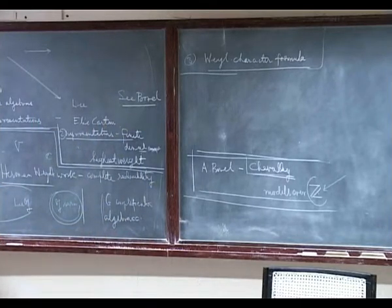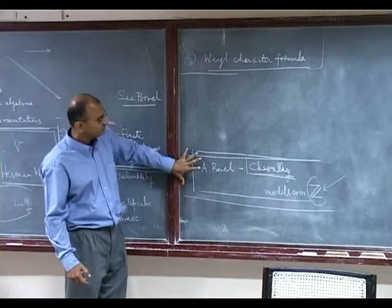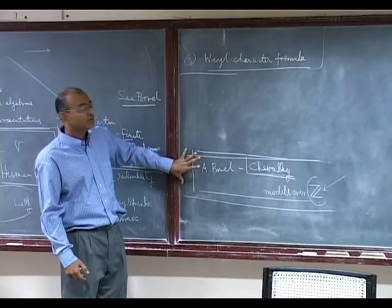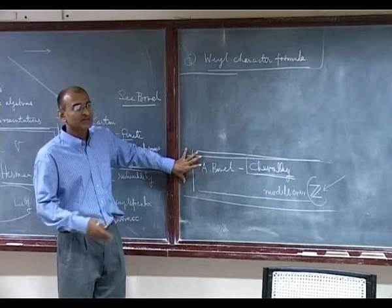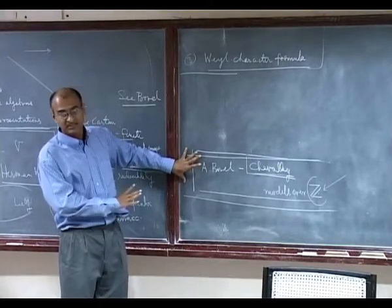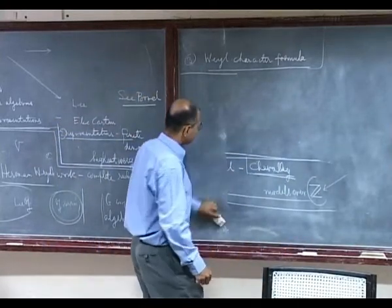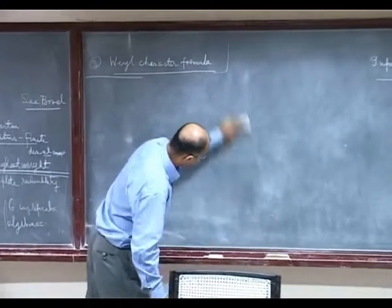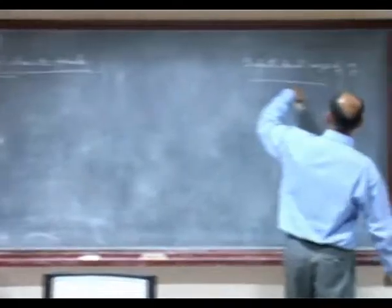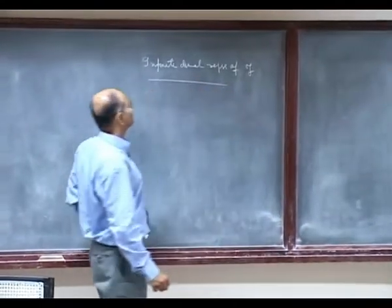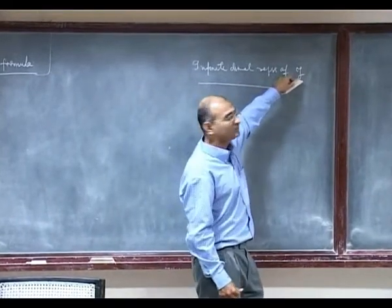Then we will go in a different direction. Following the text of Humphreys, we will see something about how to define groups over integers. The second half will be devoted to studying infinite dimensional representations of finite dimensional Lie algebras, which will be important for us.